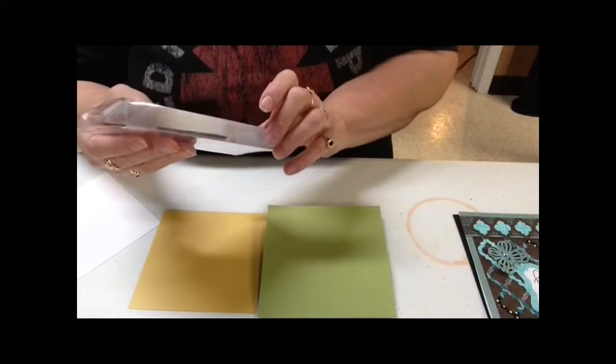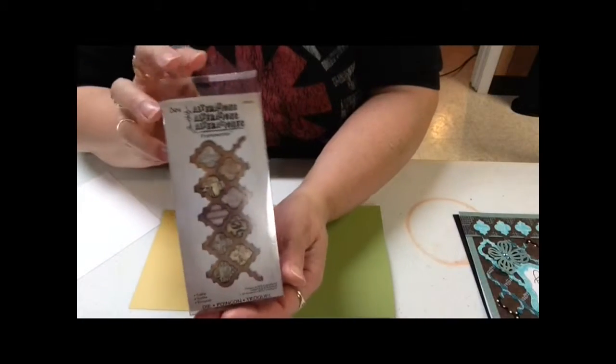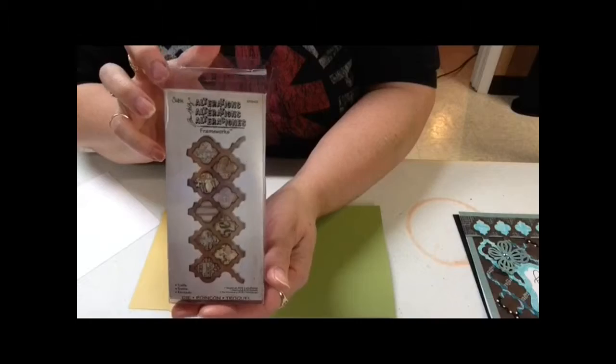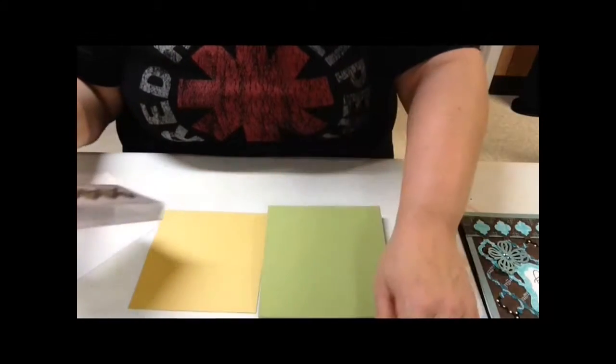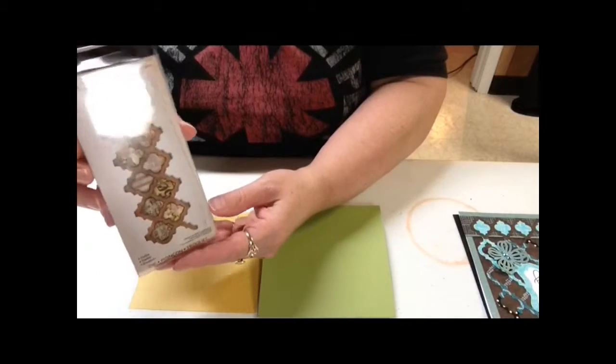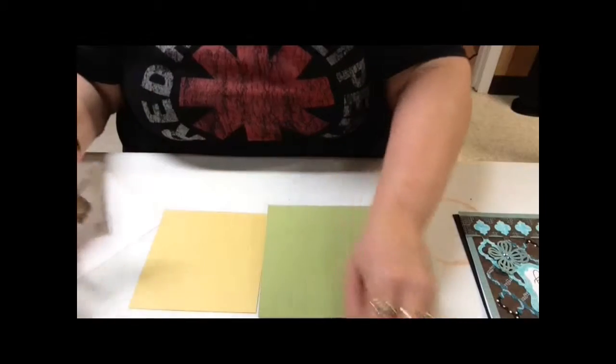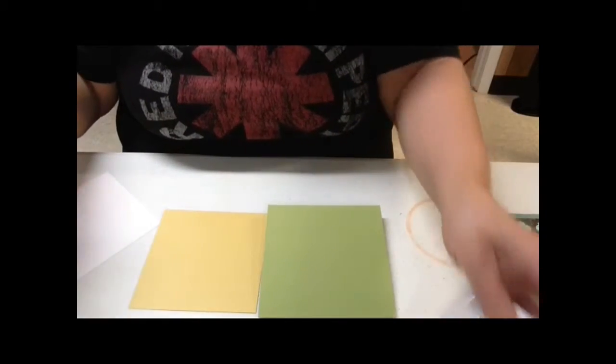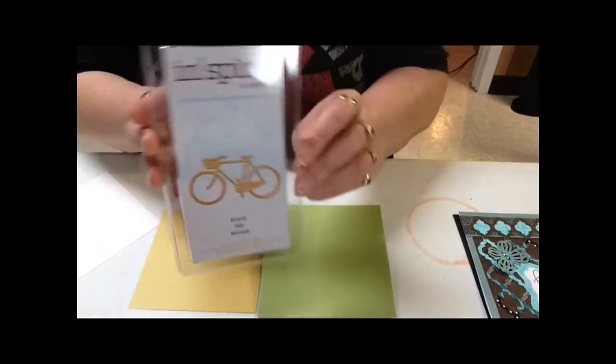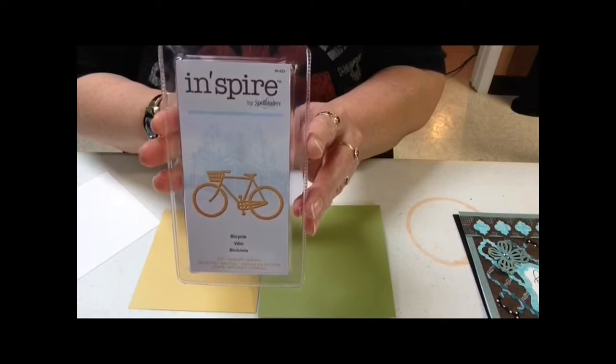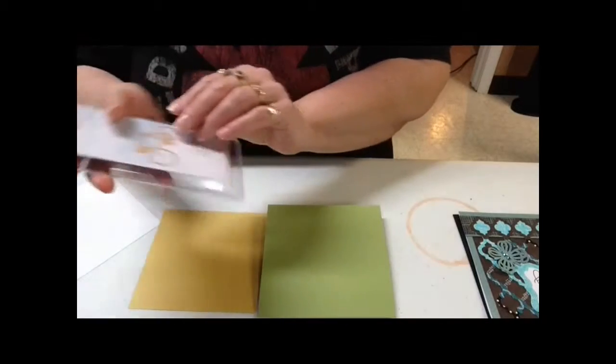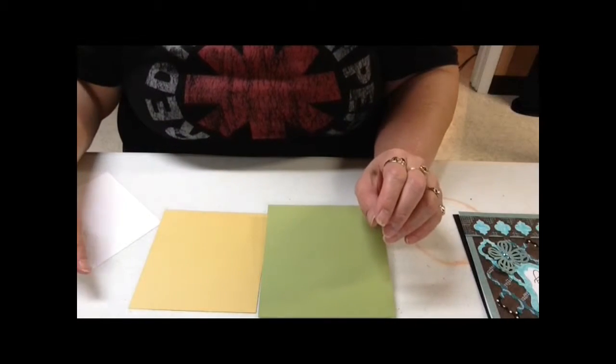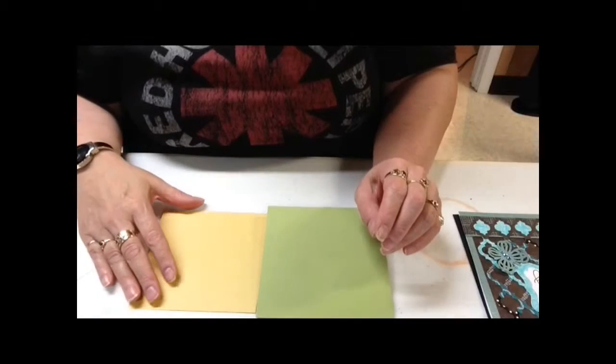I'm going to be using Tim Holtz Framework die. This one is the trellis die and I'm going to also be using this bicycle die. This is one of the new Spellbinders Inspire dies. Both of those dies are available at the Cut at Home website.